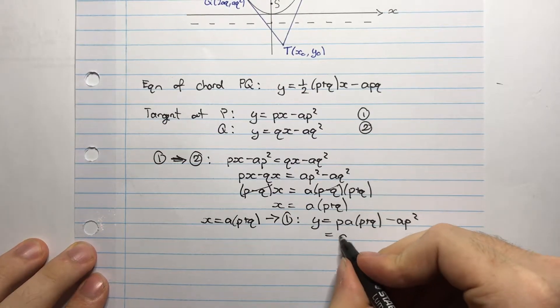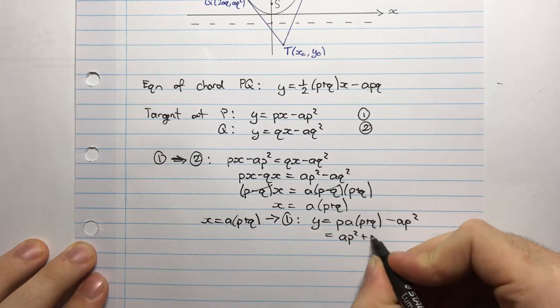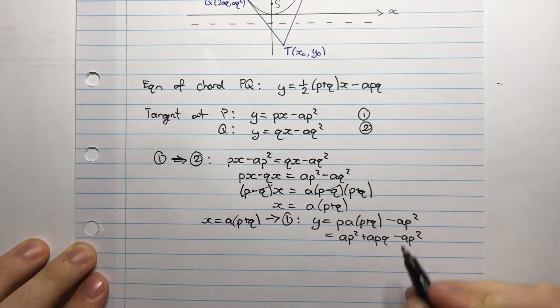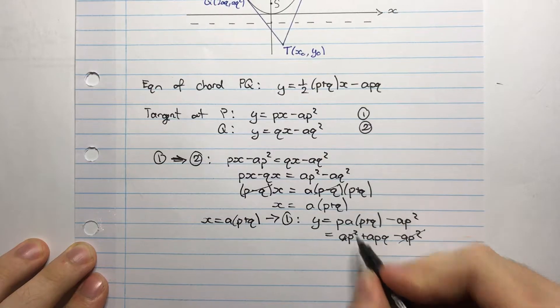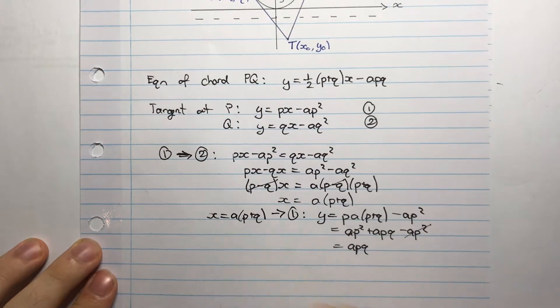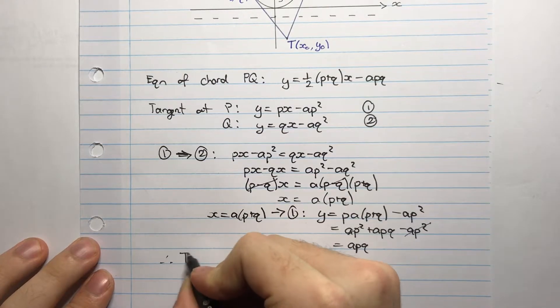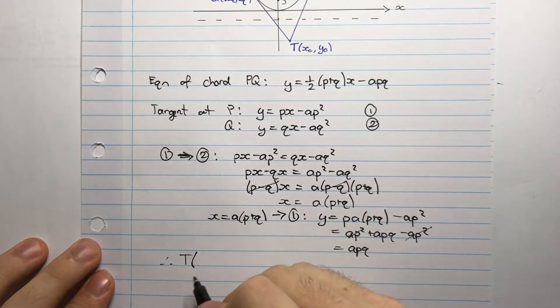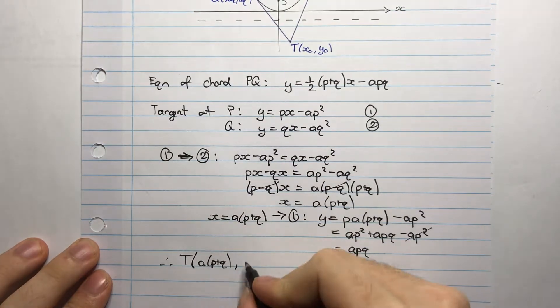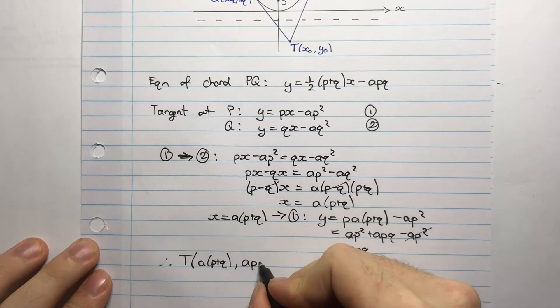Expanding this out gives me AP squared plus APQ minus AP squared. And here I can cancel these two terms. And I'm left with APQ. So therefore, my point T is given by the x coordinate, which is A into P plus Q and Y, which is APQ.